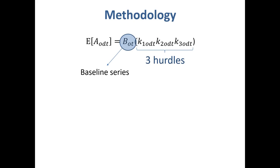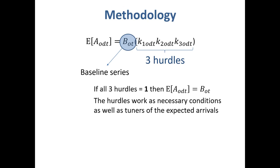The methodology works with hurdles so that the expected number of arrivals depends on a baseline series adjusted by the hurdles. If all three hurdles equal one, then the expected number of arrivals equals the baseline series. The hurdles work as necessary conditions for traveling, as well as tuners for the expected number of arrivals.